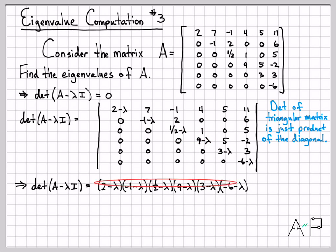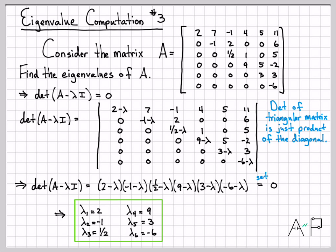So this right here is the characteristic polynomial. If we set that equal to 0, we can now find the eigenvalues. We can do this just by inspection. One of the eigenvalues is 2, one is negative 1, one is 1/2, and so on. Lambda 3 is 1/2, lambda 4 is 9, lambda 5 is 3, lambda 6 is negative 6. So these are the eigenvalues of this matrix.